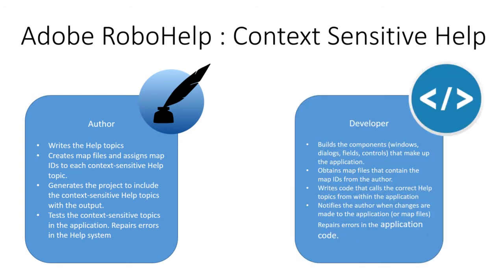The other person required in this process is the developer — the person who deals with your application and ties the documentation to it. The developer picks which piece of documentation should come up for which feature, and gets the map files from the author. There is a back-and-forth communication between both parties in order to create context-sensitive help.